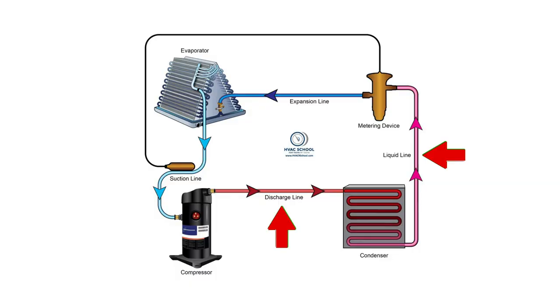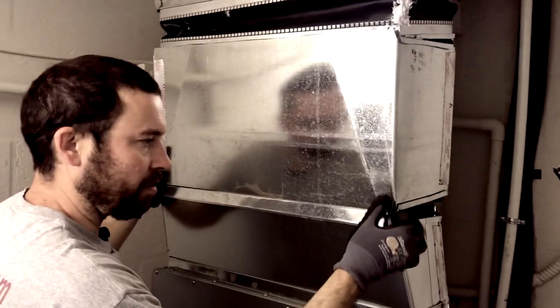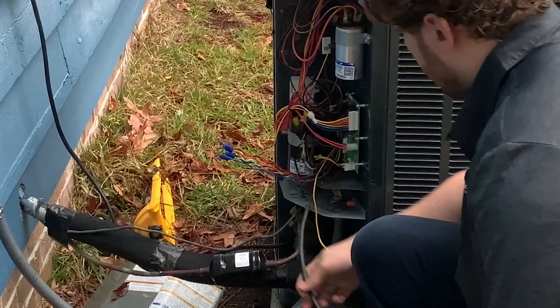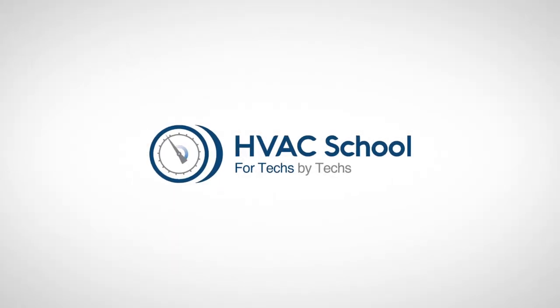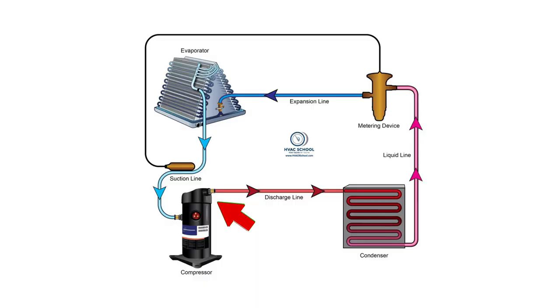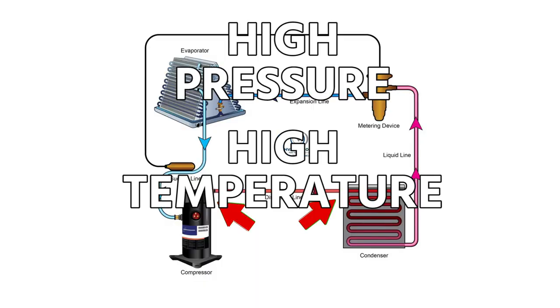Thanks for watching this quick video. We're talking about liquid lines and discharge lines, some of the differences and things to know when you are measuring pressures and temperatures on both. Your discharge line is the line that leaves your compressor and goes into your condenser. It is a high pressure, high temperature vapor.